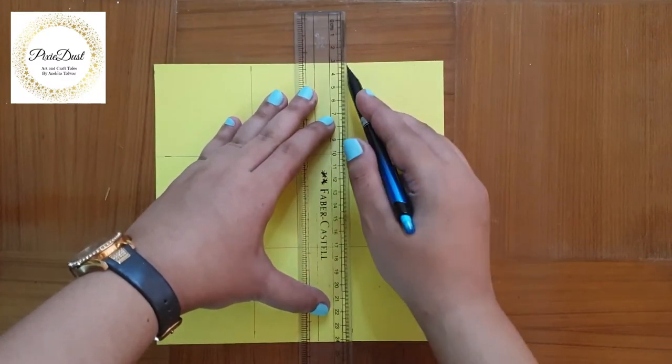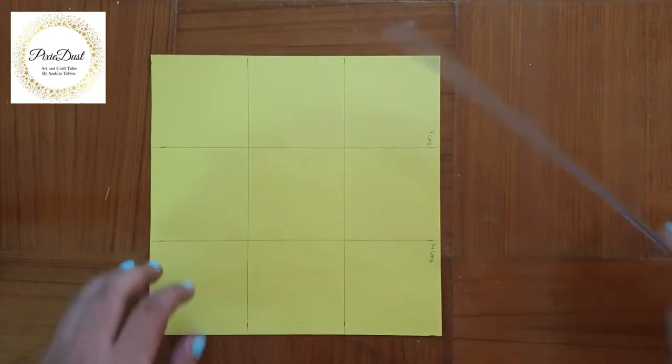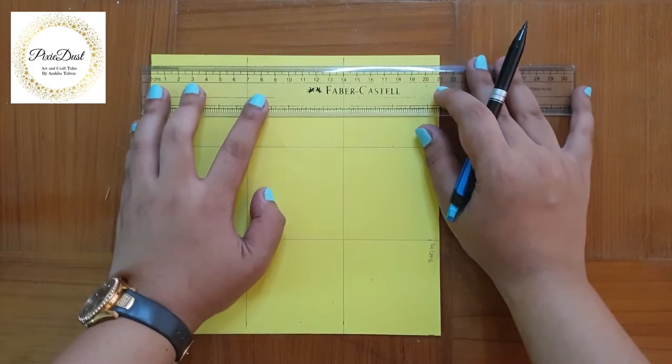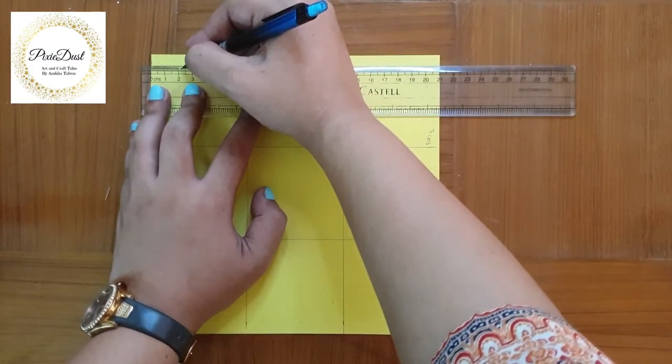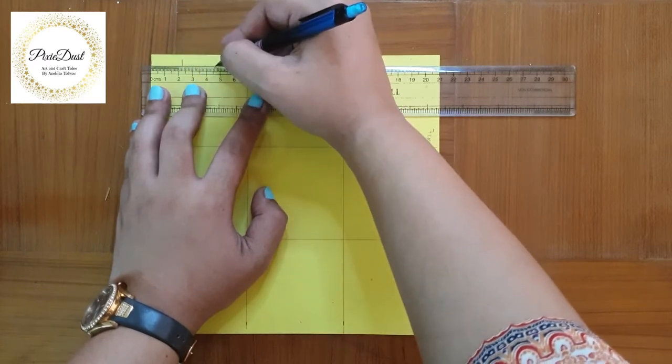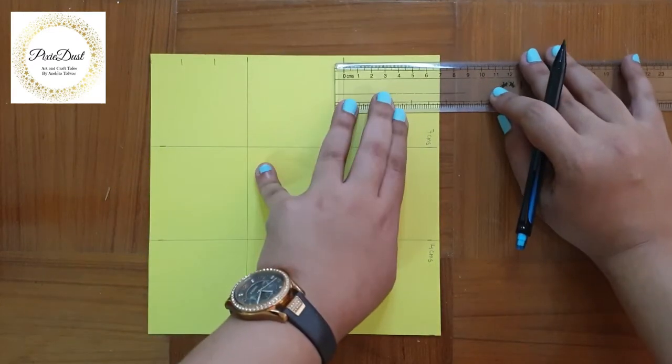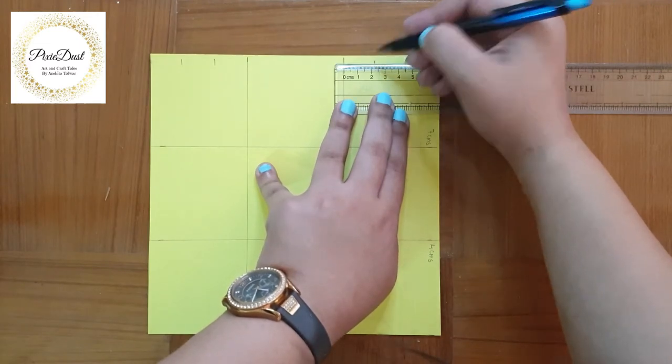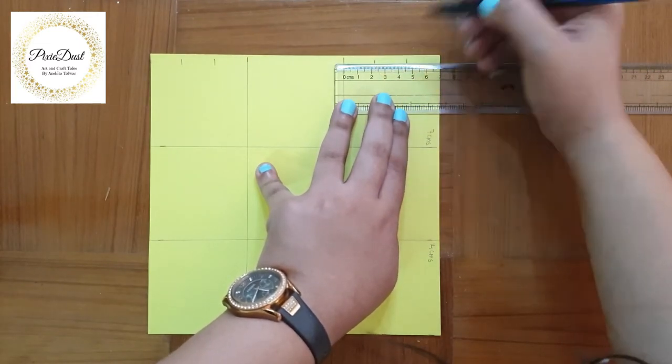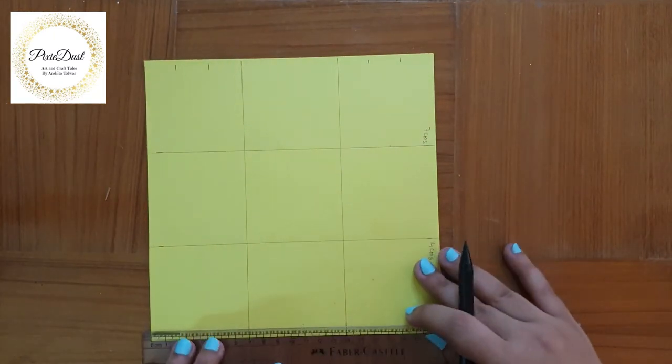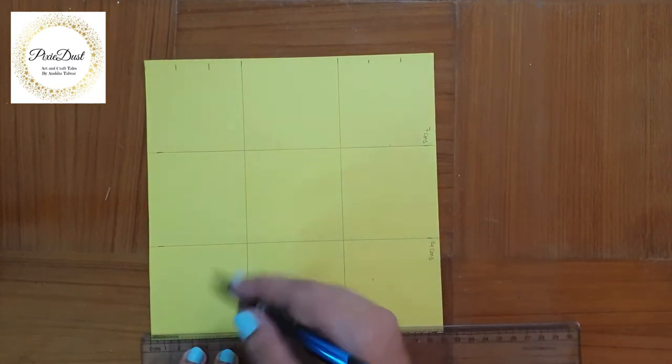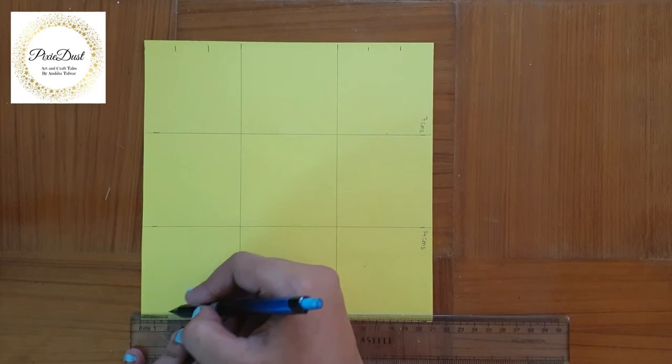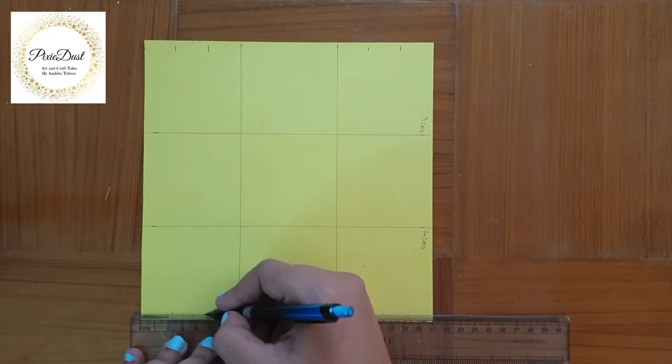Now I'm going to divide the first and the third square in three parts. We divide our 7 centimeter side in three parts. The first point comes at 2.3 centimeters and the second point comes at 4.6 centimeters. I'm going to divide the bottom first and third square similarly.